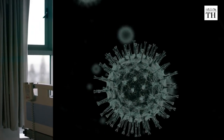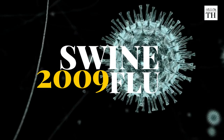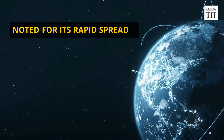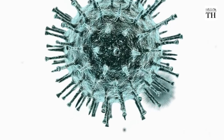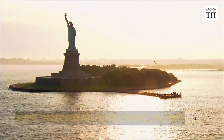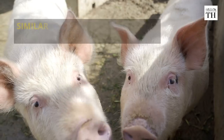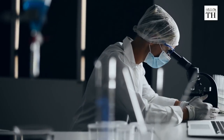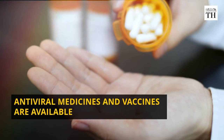The H1N1 flu, or swine flu of 2009, was the first major influenza outbreak in the 21st century. It was noted for its rapid global spread, facilitated by an unusually high degree of viral contagiousness. The H1N1 virus was first detected in the United States in April 2009, and was originally referred to as swine flu because its gene segments were similar to influenza viruses identified in pigs. Scientists developed a vaccine after the 2009 outbreak, and now antiviral medicines and vaccines are available to prevent or treat swine flu.